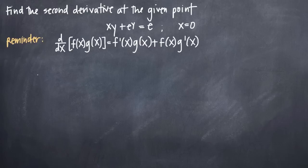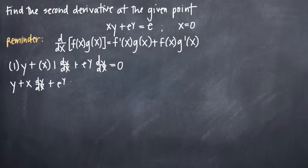Find the second derivative of this function at the given point. Use implicit differentiation and apply product rule to take the derivative. Remember to multiply by dy over dx every time you take the derivative of y.